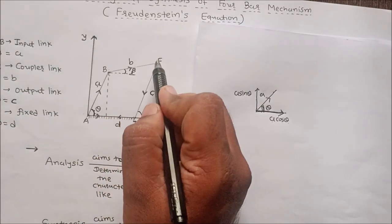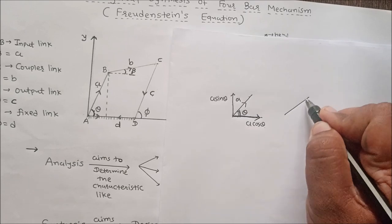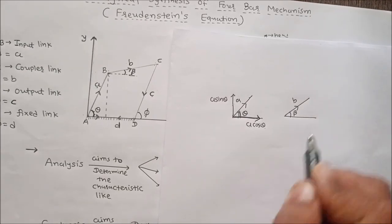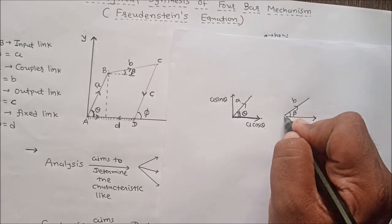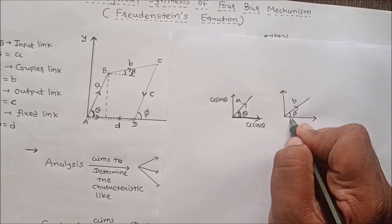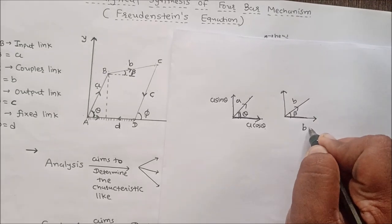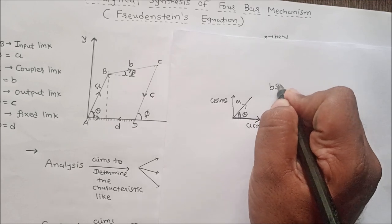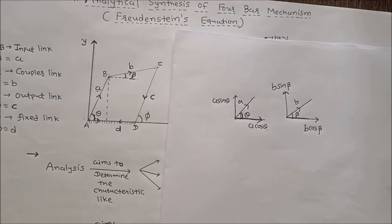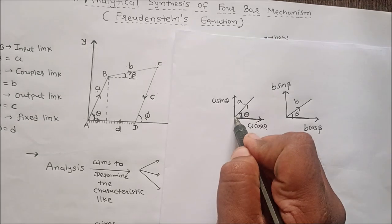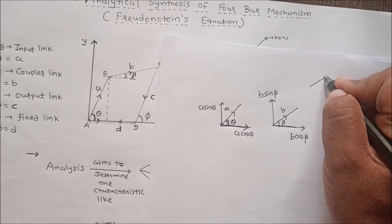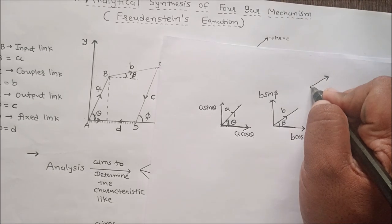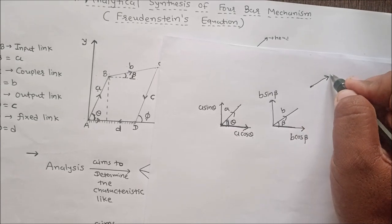Similarly, considering link BC as a vector B making an angle beta with the x-axis, there are two components. The horizontal component is B cos beta and the vertical component is B sin beta. Always remember: make components always from the tail, not the head — the vector is always in the tensile direction.